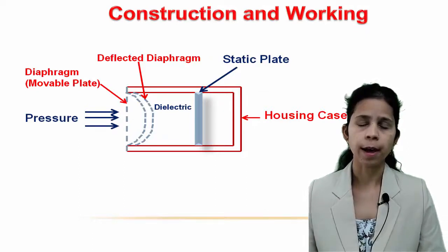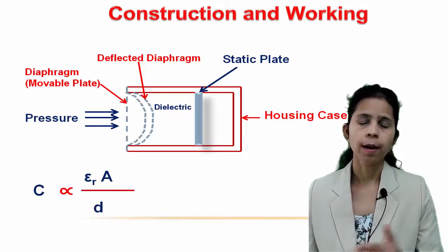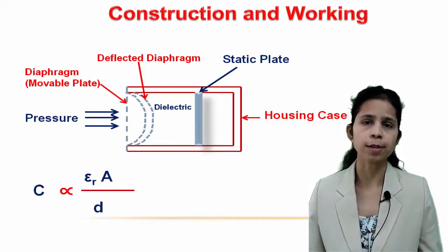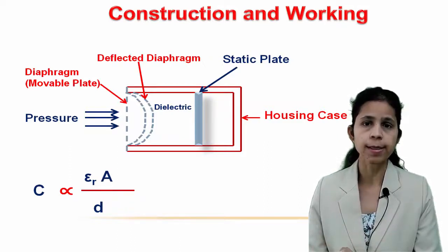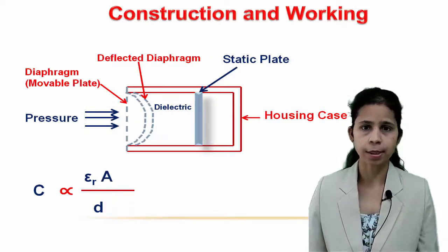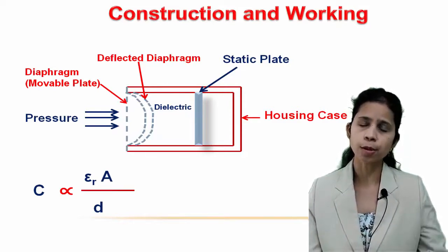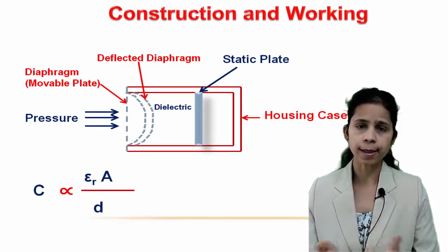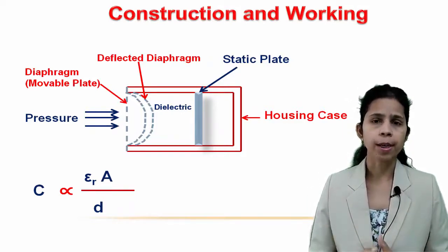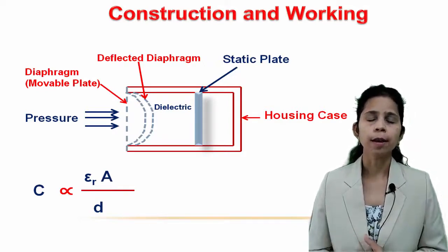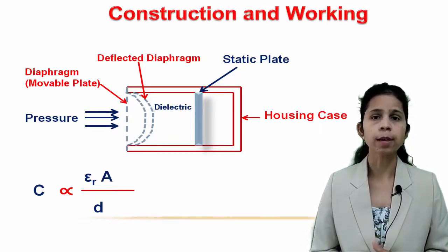Working of capacitive transducer: when pressure is applied to the movable plate, if the pressure increases the movable diaphragm moves inward. Since capacitance is inversely proportional to distance, as the distance between the static plate and the diaphragm decreases, capacitance increases. If the pressure is released or decreased, the diaphragm moves outward, the distance increases, and capacitance decreases.